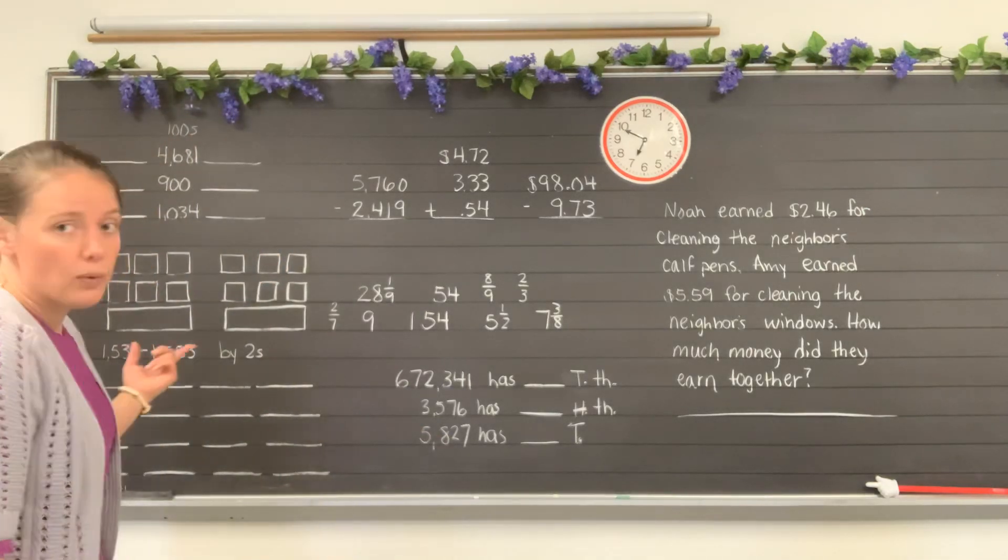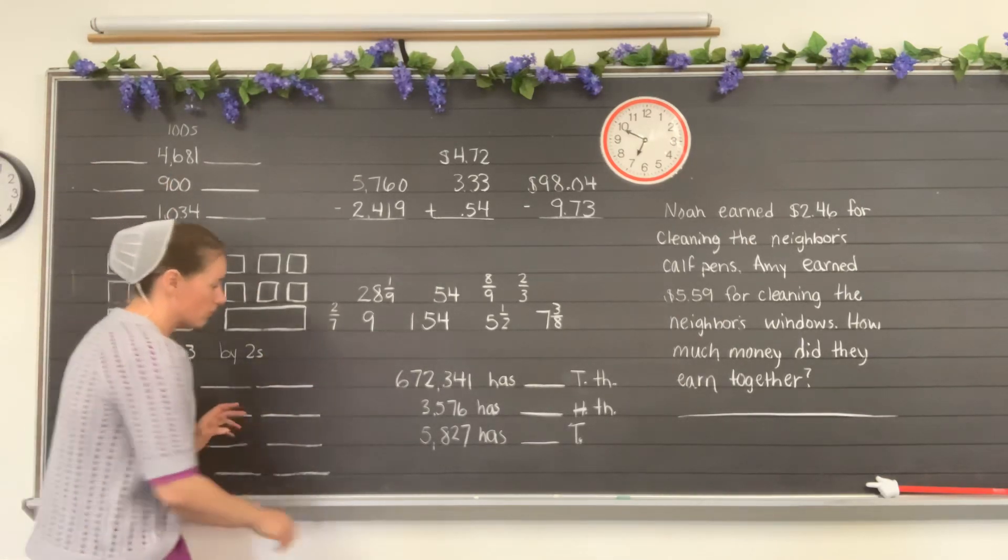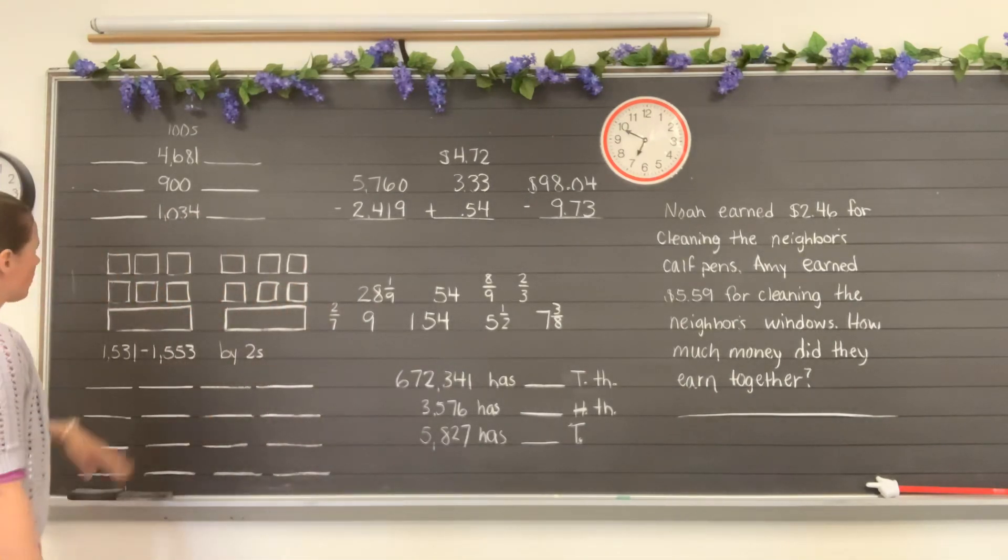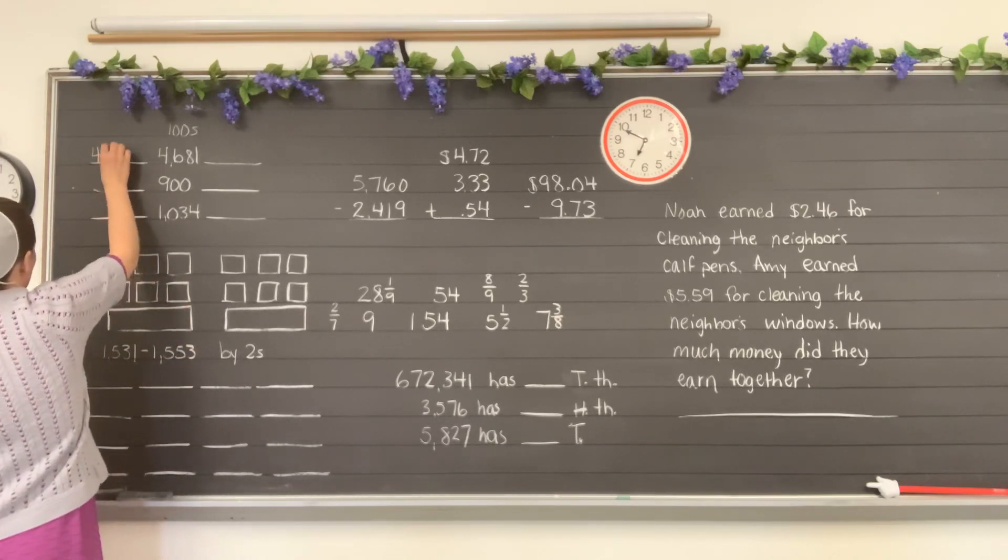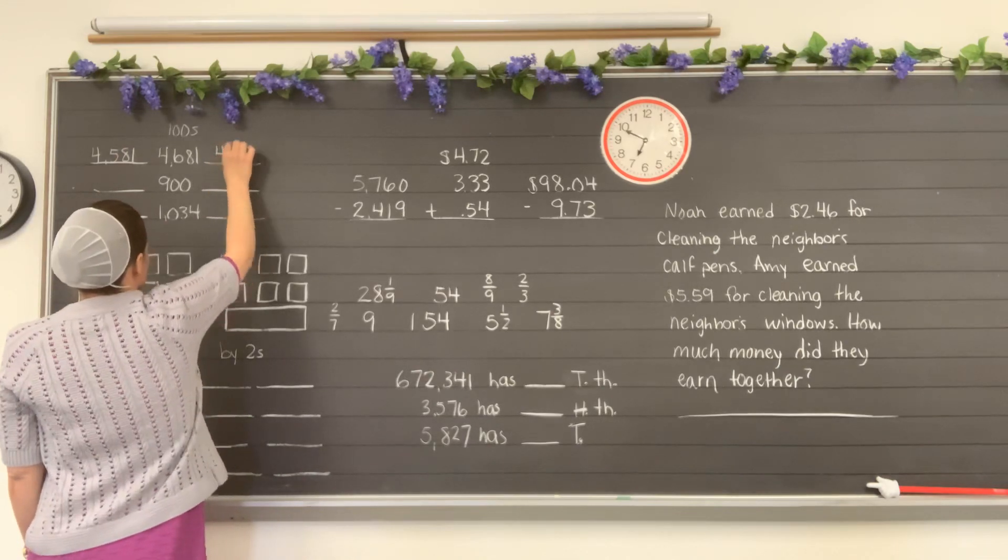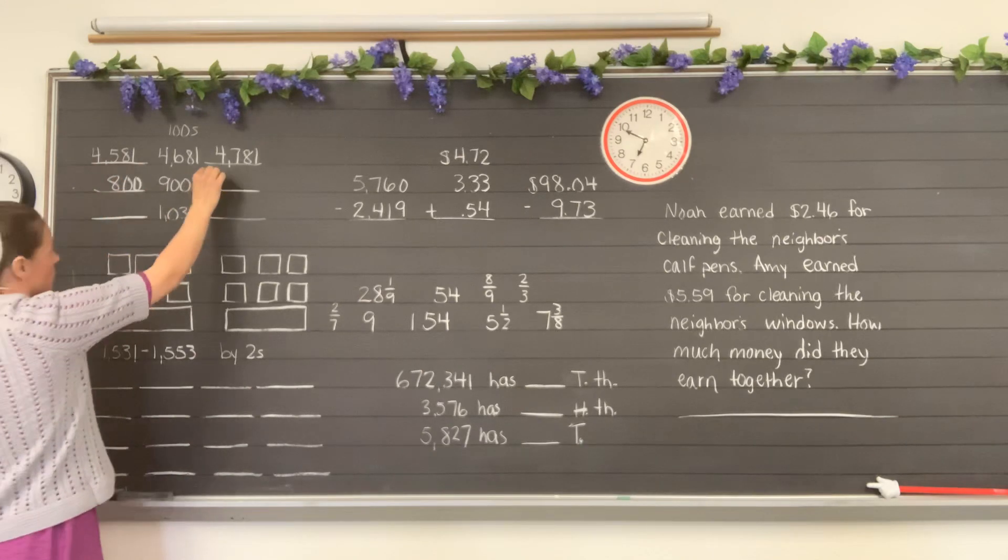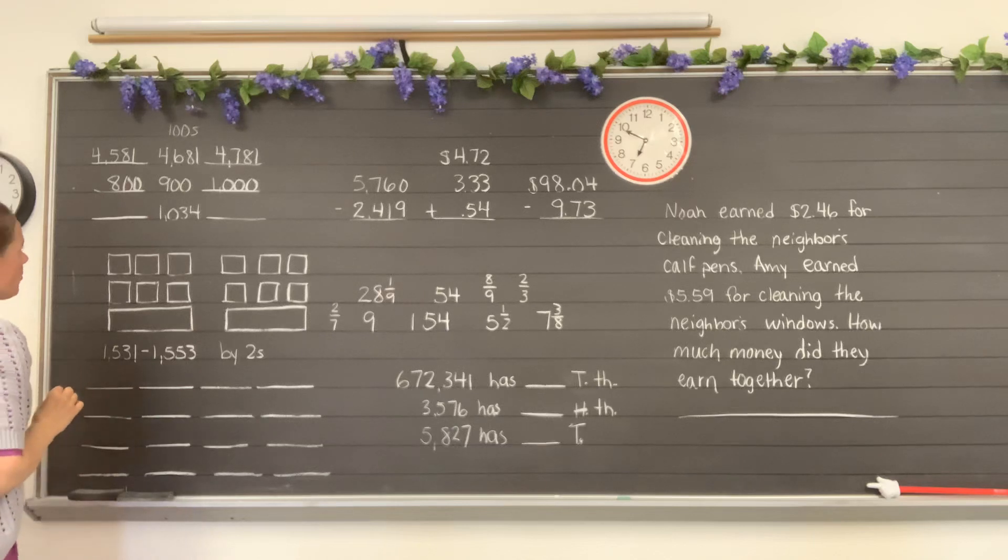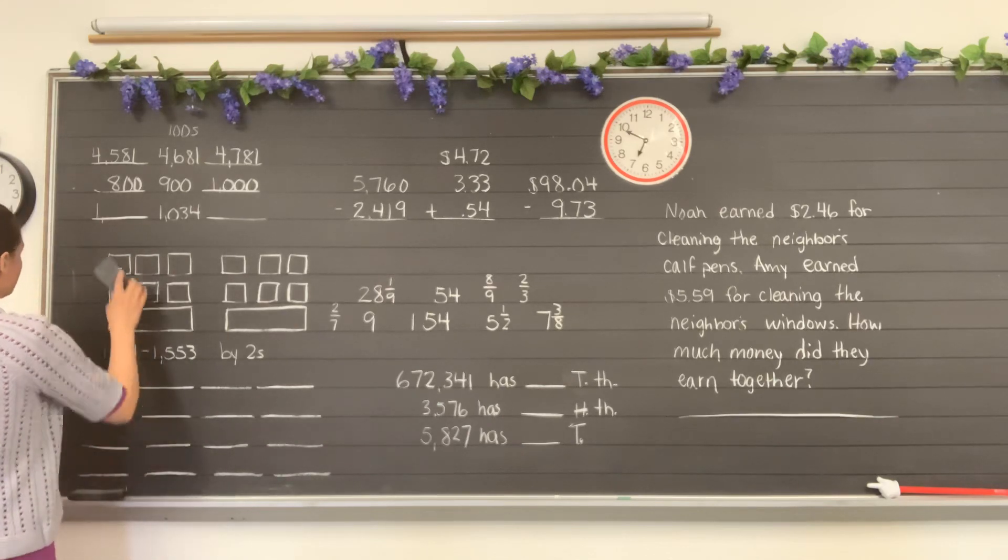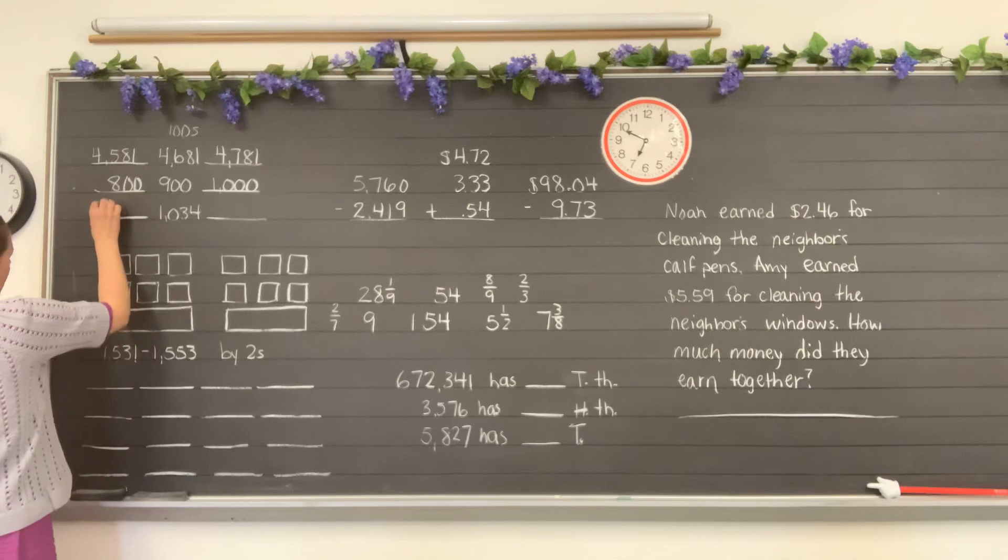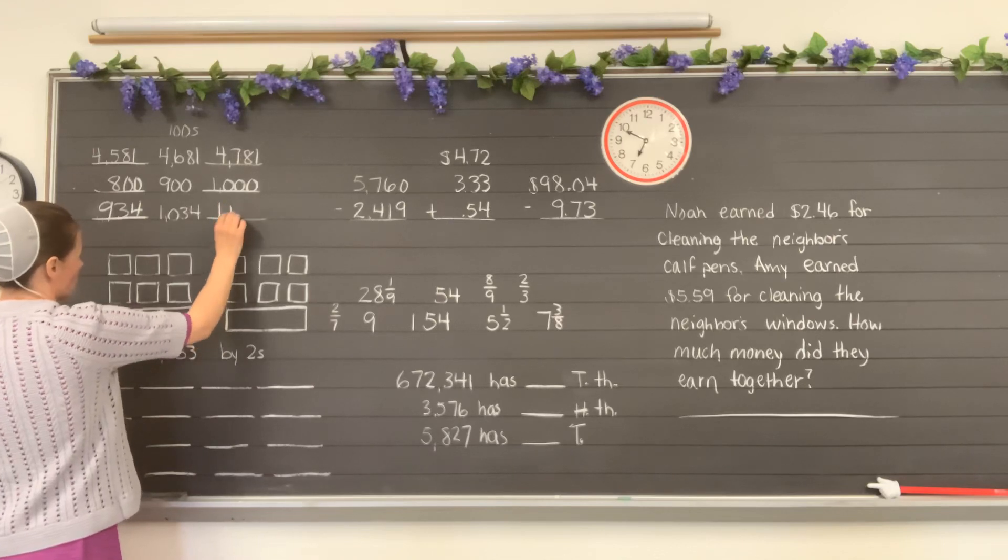Now let's look over here on the board and we have going by one hundredths on the top there, so before and after numbers going by one hundredths. We'll look in the one hundredths place here. Before 4,681 would be 4,581, and then we have 4,781. Before 900 would be 800, after 900 is 1,000. Before 1,034 would be 934, and then we have 1,034, 1,134.